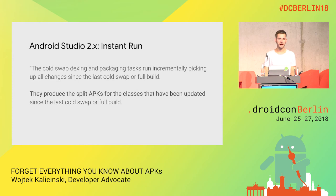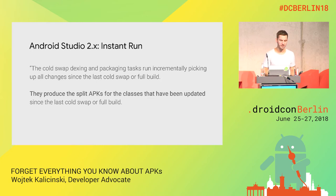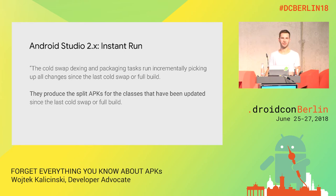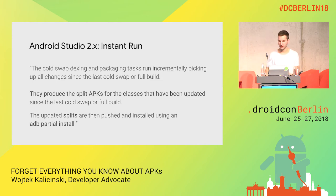The first time splits were actually used by developers — probably without you even realizing it — was when Android Studio introduced Instant Run. In order to have fast install time on the emulator, Android Studio figured out which classes and resources changed, and instead of pushing the whole APK, it used ADB partial install in tandem with the split APK system to only push changes to the emulator. However, that never translated to any benefit for users — it was only for developers to quickly debug and rerun an app.